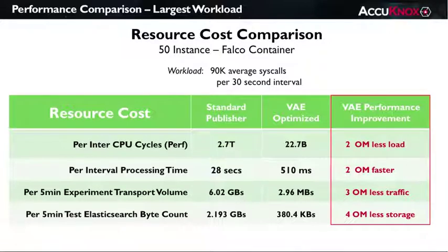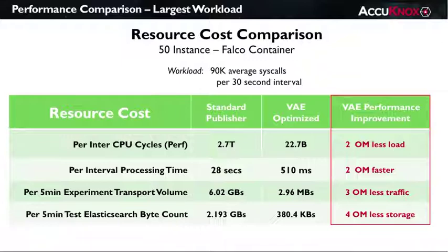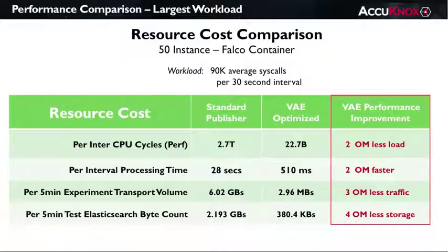Here is the performance breakdown of how well the VAE-optimized forensic publisher stacked up against the standard publisher. The VAE's CPU cost and processing time outperformed the standard publisher by two orders of magnitude. In fact, the standard publisher nearly reached its saturation point at 50 containers, while the VAE publisher barely broke half a second of per-interval processing time. The VAE publisher also reduced network traffic production by three orders of magnitude. Finally, the VAE reduced the data storage cost by four orders of magnitude over the standard publisher, as publishing the VAE activity model to abstractly summarize the stable intervals resulted in a dramatic reduction compared to storing the full forensic stream.